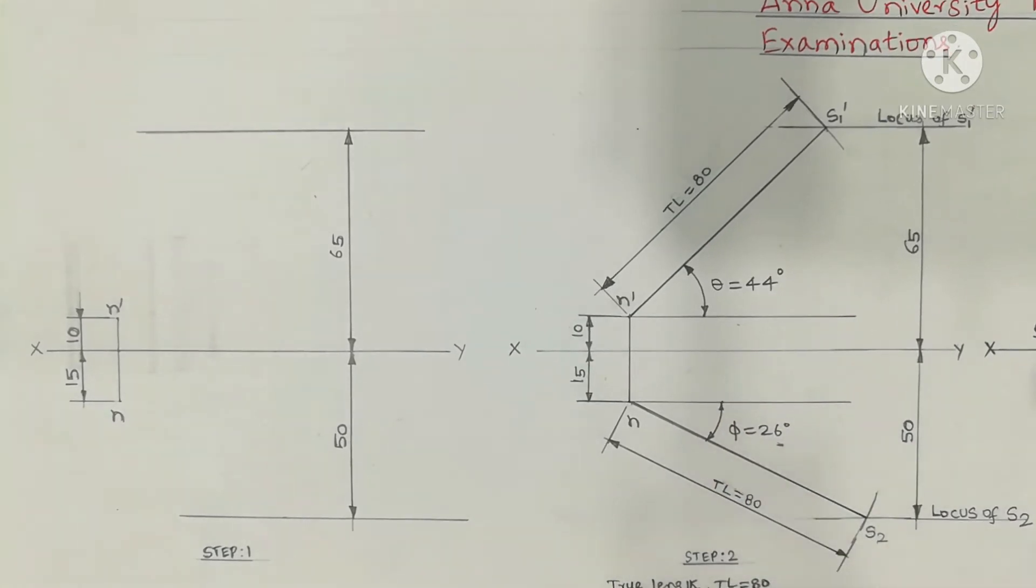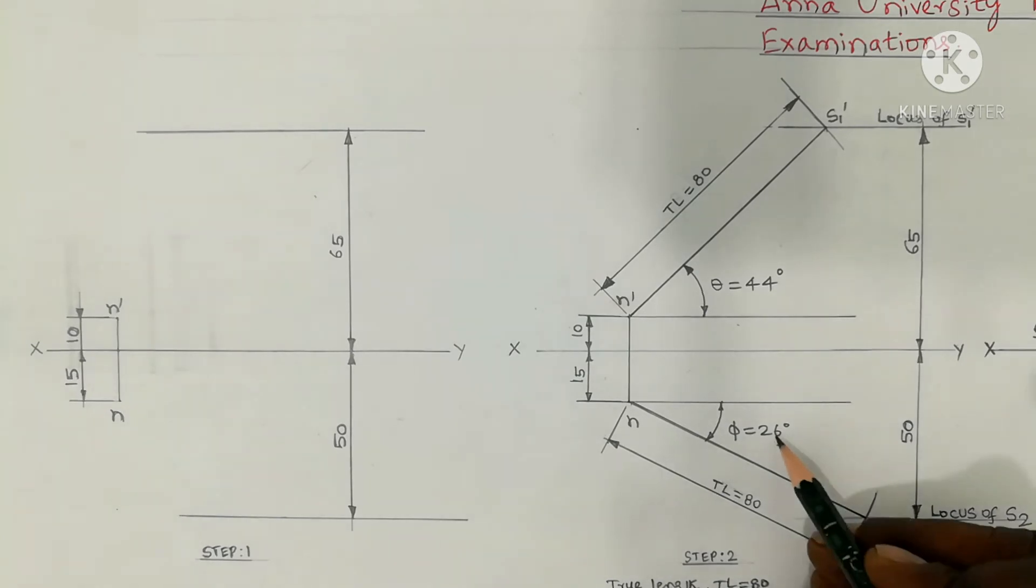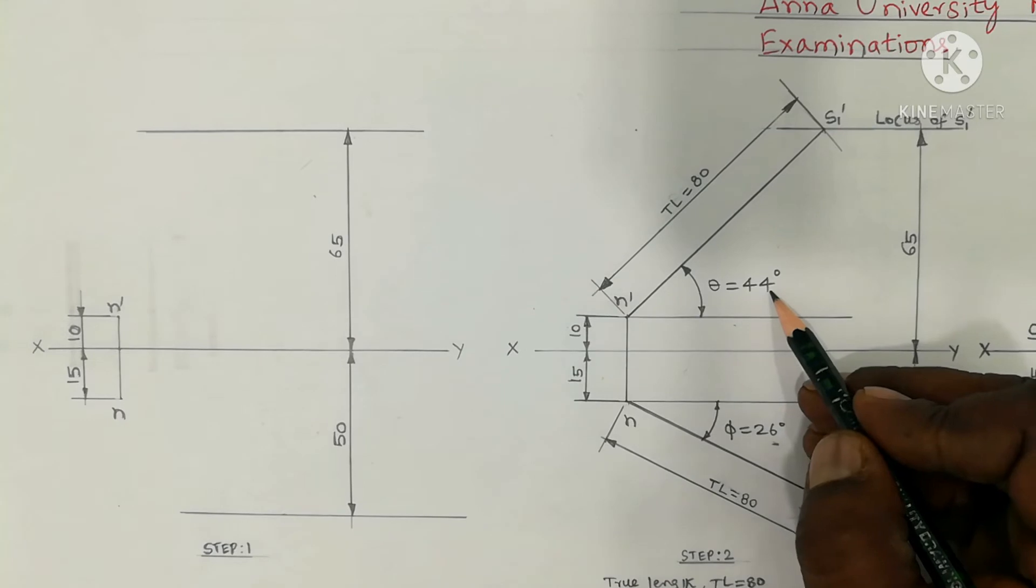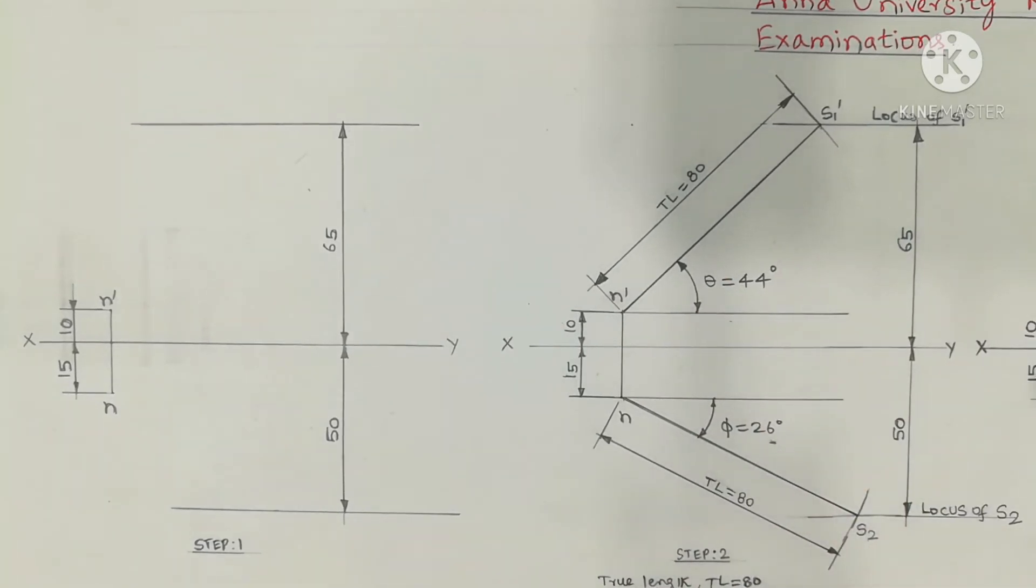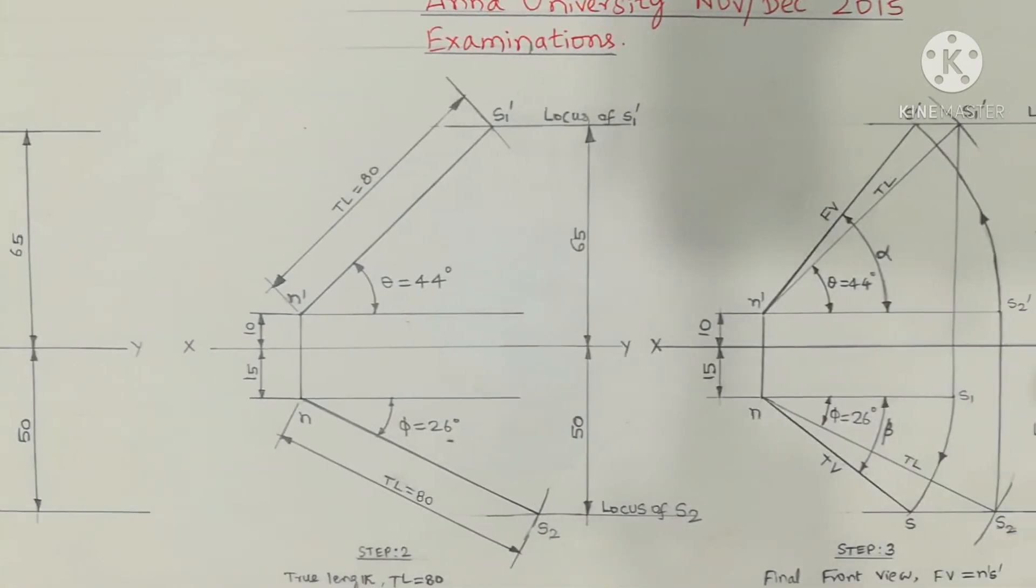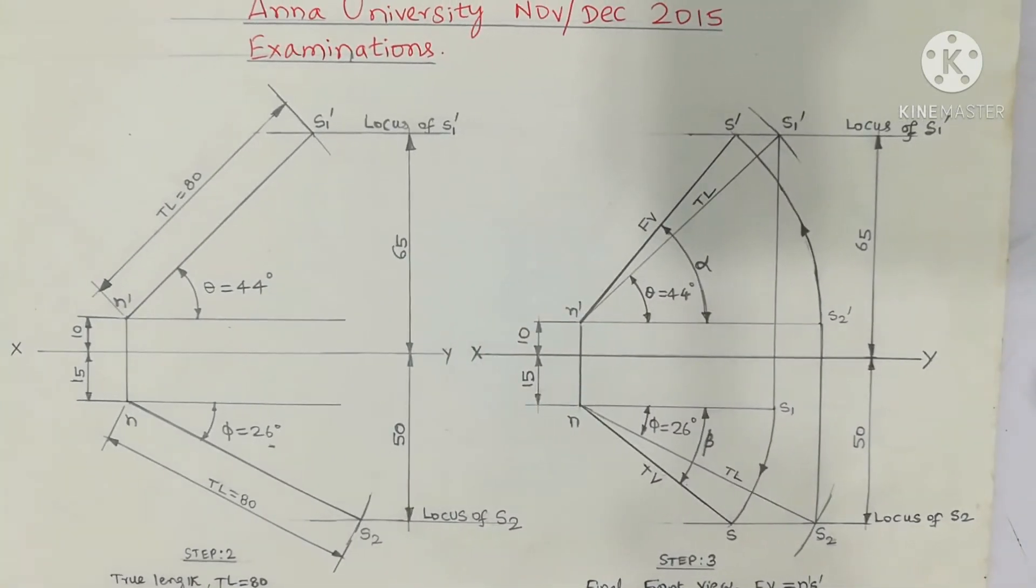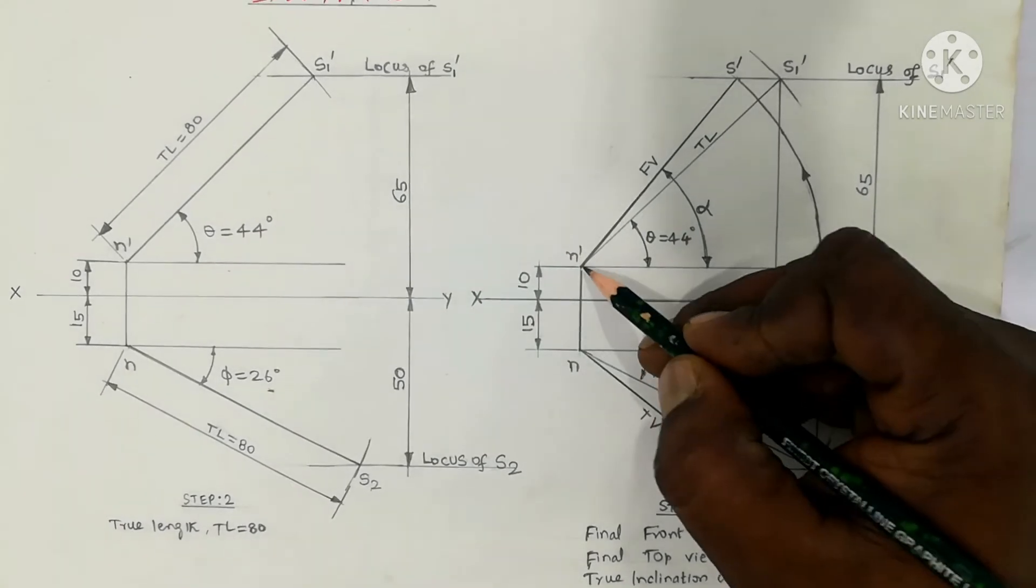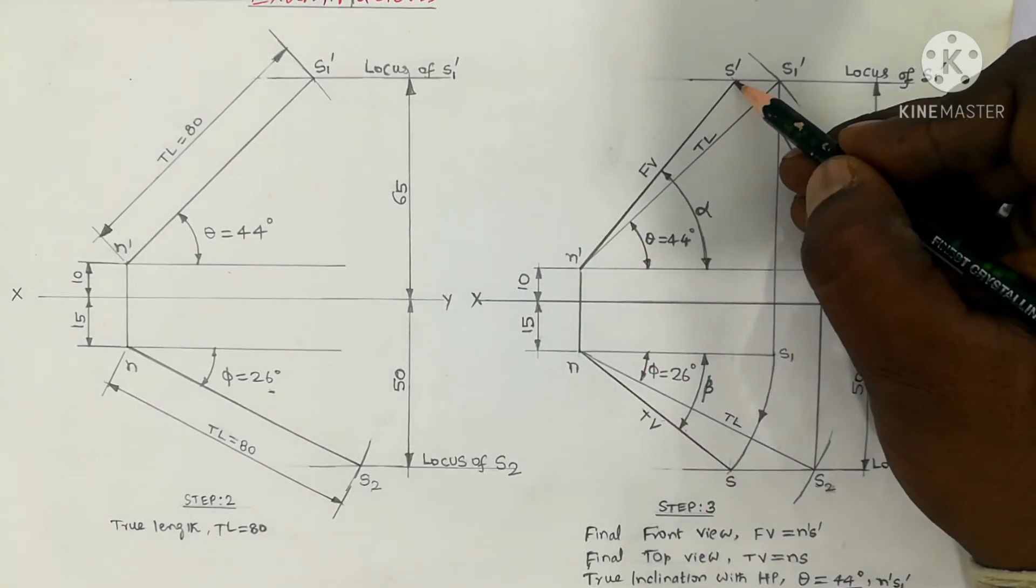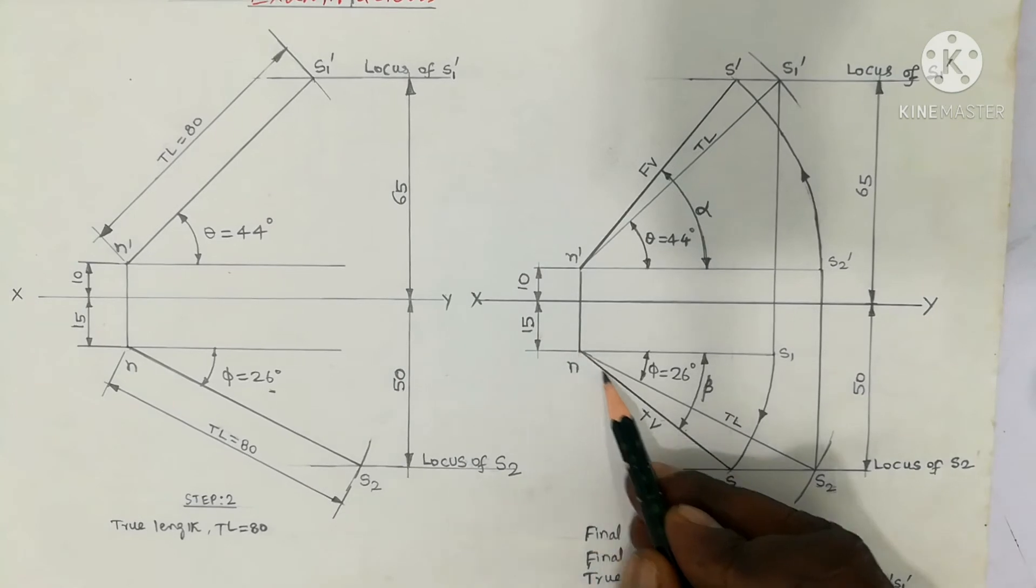Inclined to VP, the angle from the x-ray line. It is measured as 26 degrees. Phi is 26 degrees and theta is 44 degrees. After completing this up to step 2, in the final step, final front view and final top view. That is N dash S dash is the final front view. N S is the final top view.